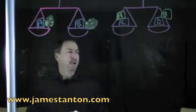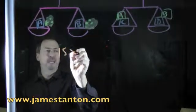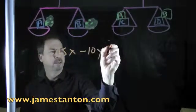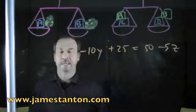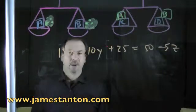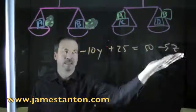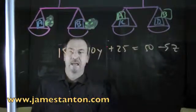So for example, I'm doing some problem. I've got 15x minus 10y plus 25. Apparently it's 15 minus 5z, 5z. Suppose I'm doing some calculations, some thinking, and I'm led to an equation like that, and that's pretty ghastly.